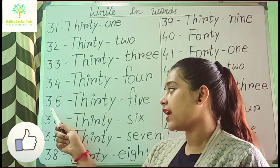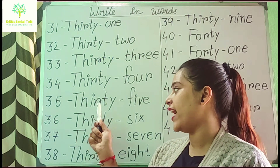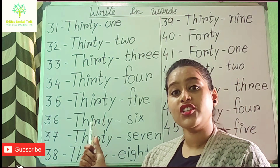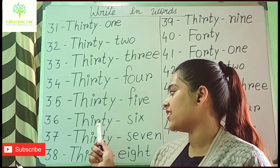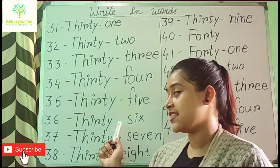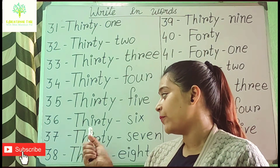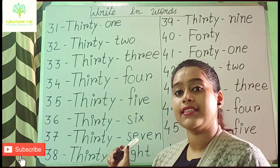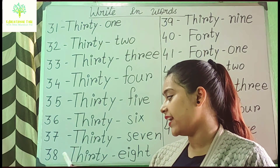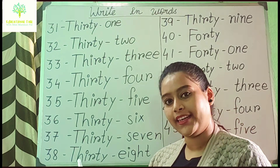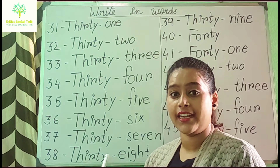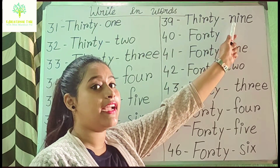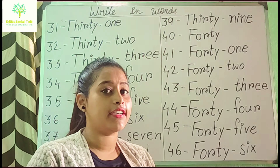For 34, T-H-I-R-T-Y then 4 is F-O-U-R. For 35, first write 30 spelling T-H-I-R-T-Y, then 5 is F-I-V-E. For 36, T-H-I-R-T-Y then 6 is S-I-X. For 37, T-H-I-R-T-Y then 7 is S-E-V-E-N. For 38, T-H-I-R-T-Y then 8 is E-I-G-H-T. For 39, T-H-I-R-T-Y then 9 is N-I-N-E.